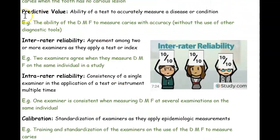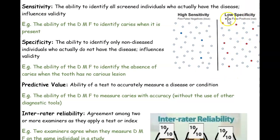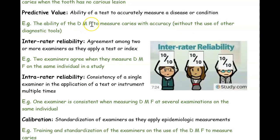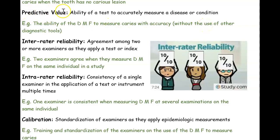You want to have good predictive value — accurately measuring a disease. You don't want to inaccurately diagnose people with caries when they don't have it. If the DMFT index is accurate, it has good predictive value — the ability to measure caries accurately without the use of other tools, such as identifying DMFT visually without X-rays.